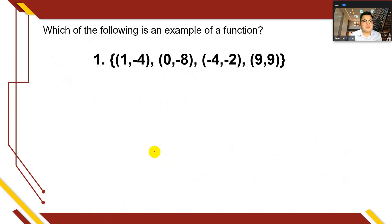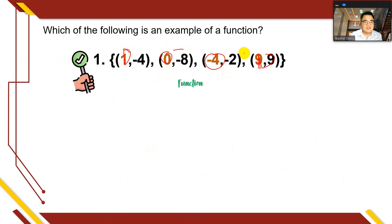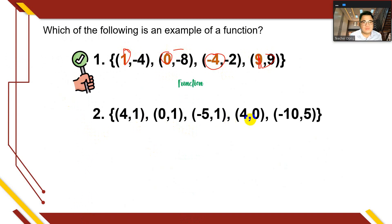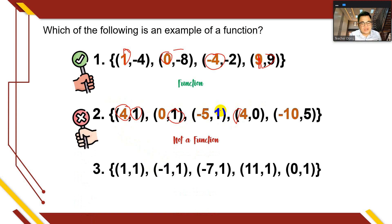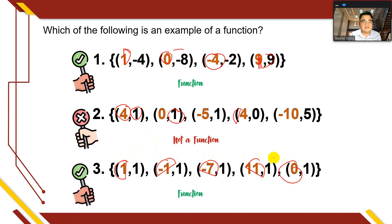Which of the following is a function? Set 1: (1,-4), (0,-8), (-4,-2), (9,9) — all first values are unique, so this is a function. Set 2: (4,1), (0,1), (-5,1), (4,0), (10,-10), (5,?) — 4 is repeated as a first element, so this is not a function. Set 3: (1,1), (-1,1), (-7,1), (11,1), (0,1) — no repeated first elements, so this is a function.